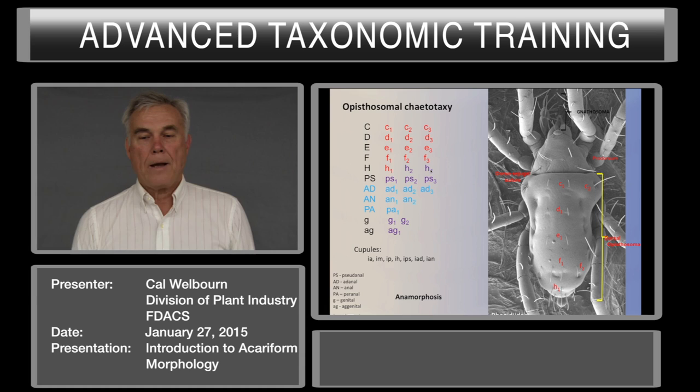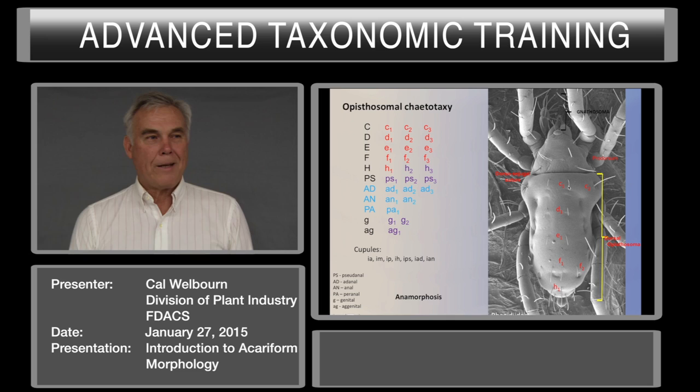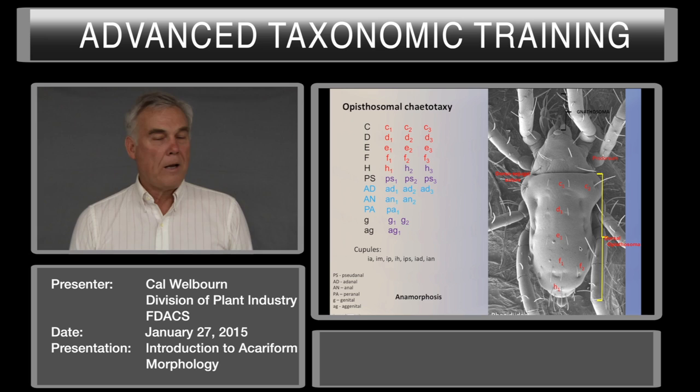It's critically important to learn this chaetotaxy arrangement: C-row, D-row, E-row, F-row. It's especially important in spider mites because to get to genus you have to know how many H-setae there are—two pairs or three pairs. What we normally do is figure out how many C's, D's, E's, and F's there are, then look at the genitals and adgenitals, and anything left has to be H-setae. This is the hardest thing for beginners to grasp, but once you get it, it applies to all Prostigmata. There are exceptions—some mites are hypertrichous (they add extra setae) and some are hypotrichous (they lose basic setae)—but for most groups the CDEFH system works very well.